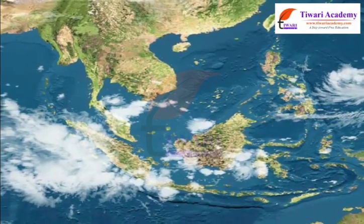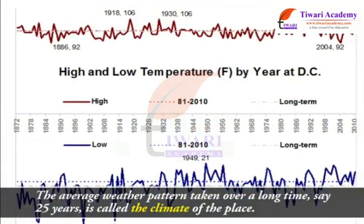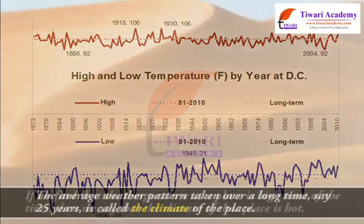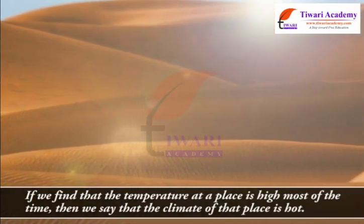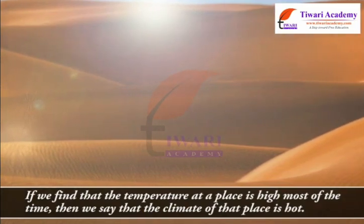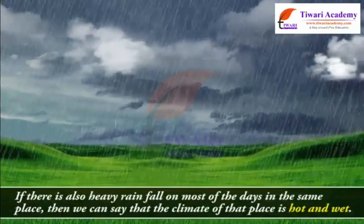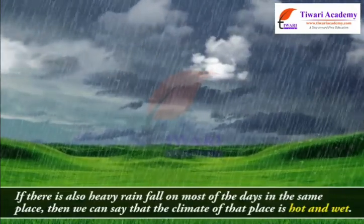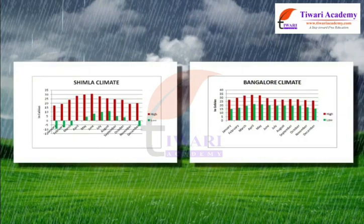The average weather pattern taken over a long time, say 25 years, is called the climate of the place. If we find that the temperature at a place is high most of the time, then we say that the climate of that place is hot. If there is also heavy rainfall on most of the days in the same place, then we can say that the climate of that place is hot and wet. In the tables given, we have provided the climatic conditions at two places in India.